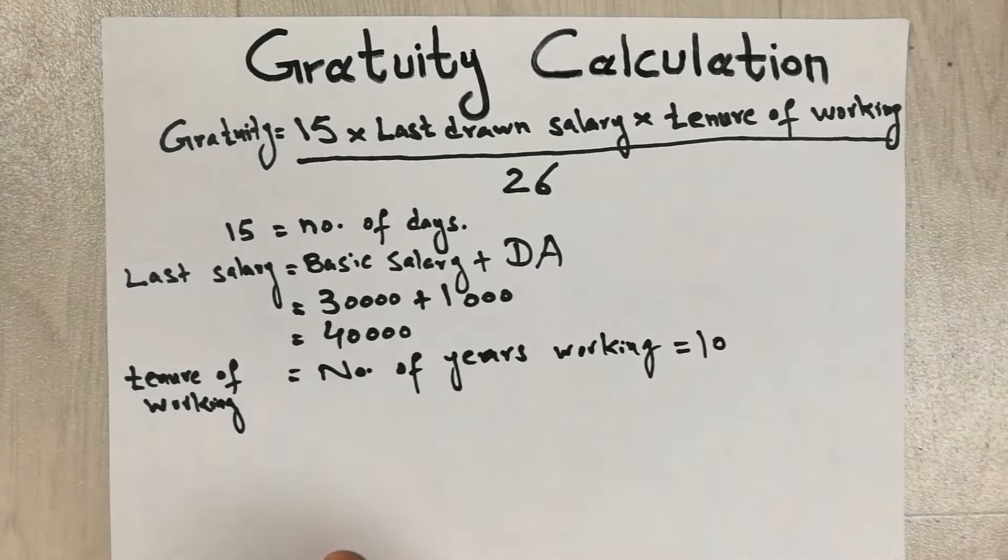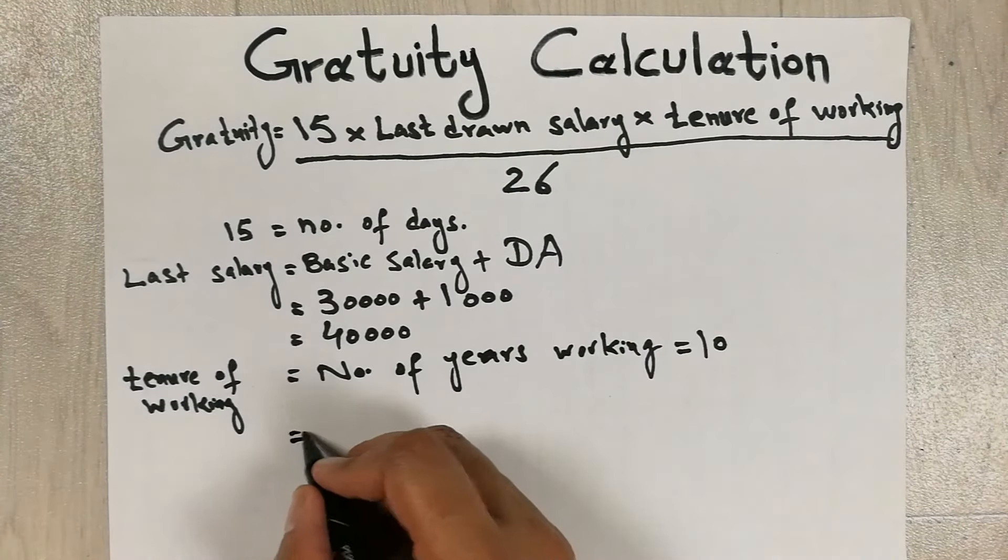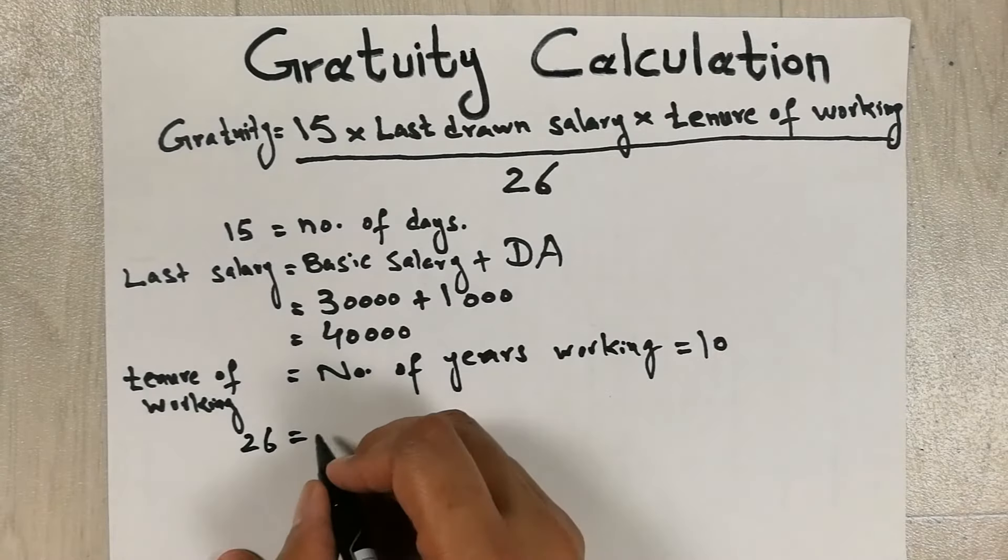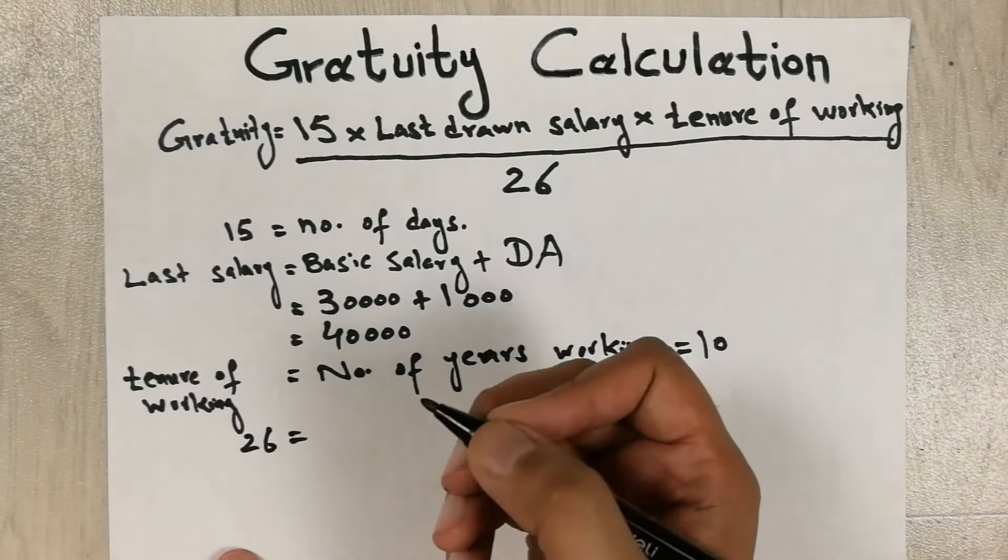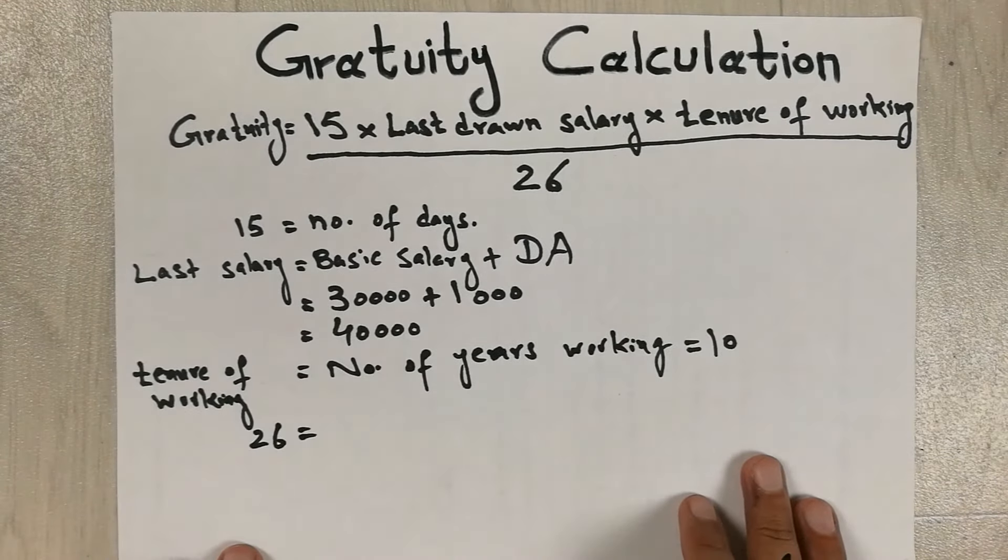And in the last part which is 26, so guys 26 is the number of days in a month that you are working, because you work for 26 days in one month.